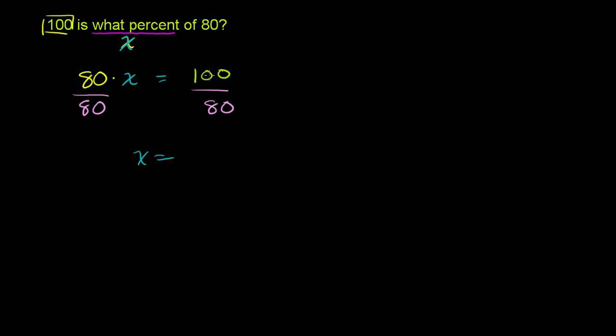They both share a common factor of 20. So 100 divided by 20 is 5, and 80 divided by 20 is 4. So in simplest form,